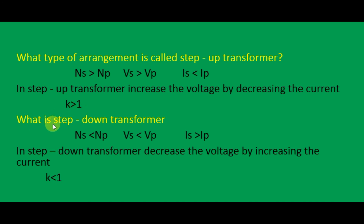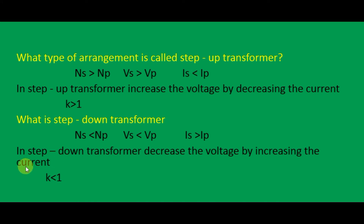What is a step-down transformer? In a step-down transformer, the number of turns in the primary coil is high, so voltage in the primary coil is high but current in the secondary coil is high. That is: NS less than NP, VS less than VP, and IS greater than IP. A step-down transformer decreases the voltage by increasing the current. The transformer ratio K is less than 1.